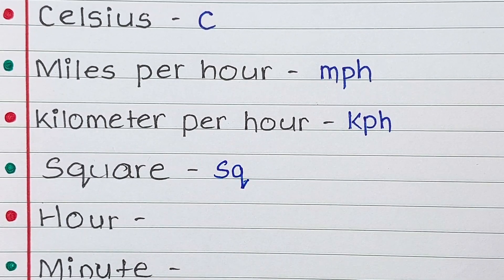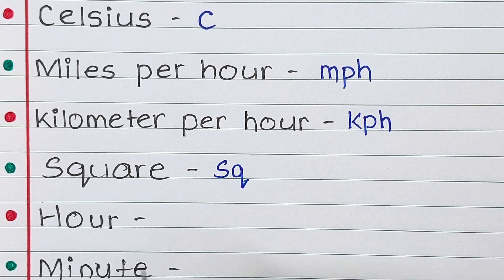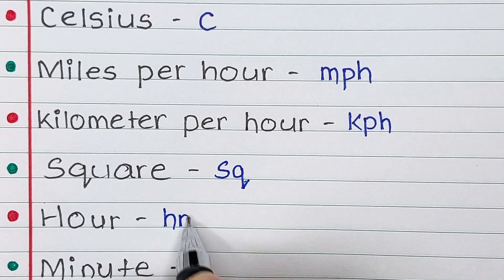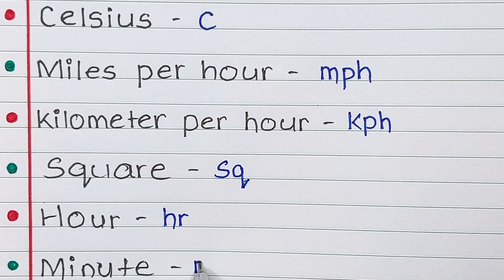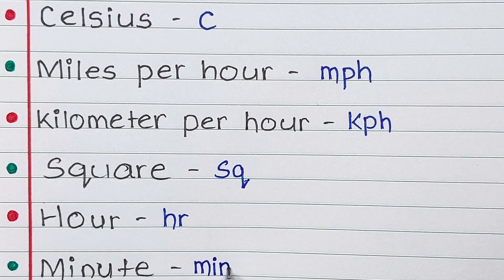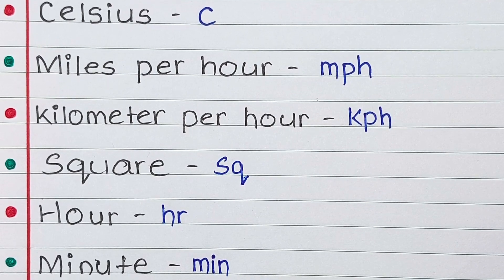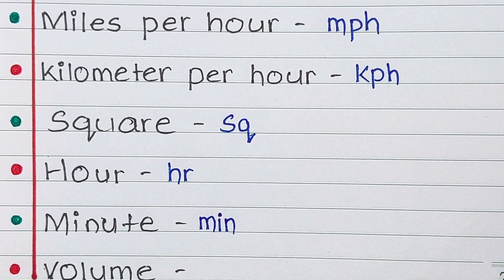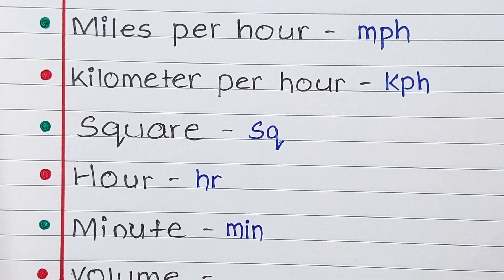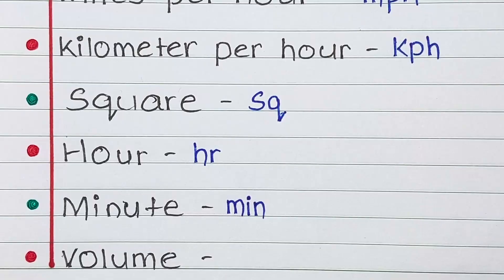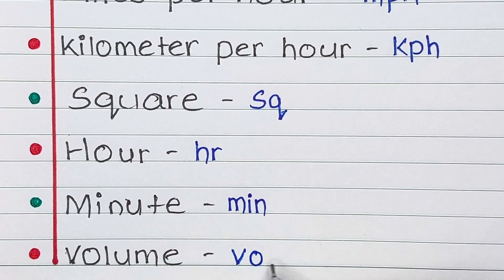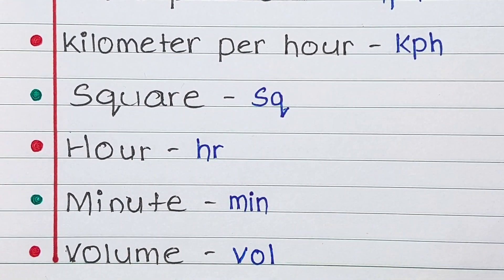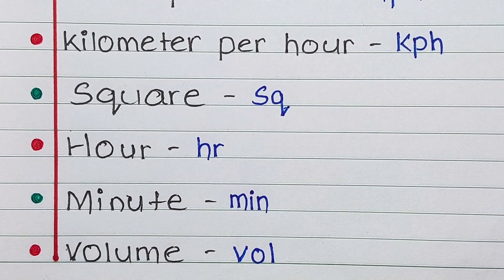Next is square. Square is abbreviated as sq. Next is hour. Hour is written as hr. Next is minute. Minute is written as min. Next is volume. Volume is represented as vol.